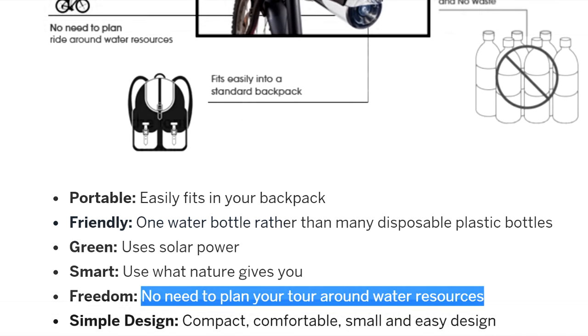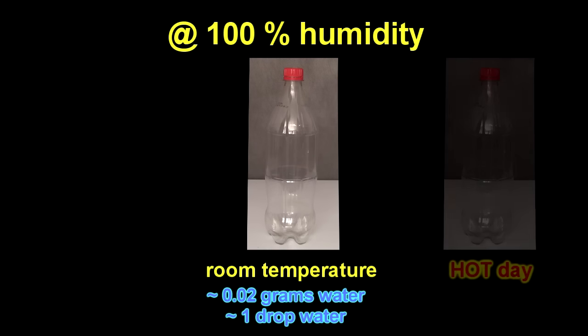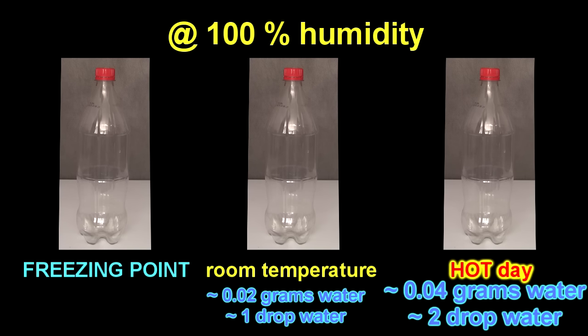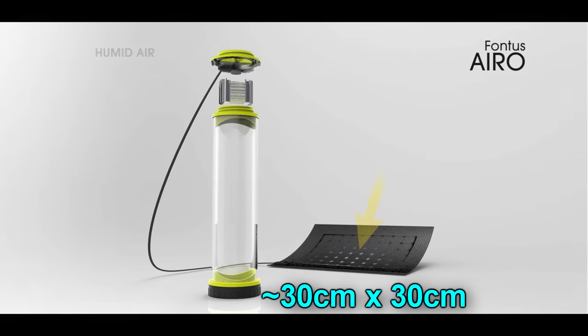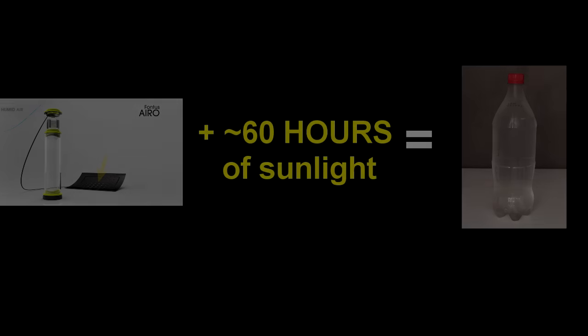But honestly, the little or no water thing is probably about right. Some back-of-the-envelope calculations for this thing running at room temperature is it will lose about half of its efficiency at 50% humidity and won't work at all below 25% humidity. To make things even better, the Fontus Aero ran on a solar panel about 1,000 square centimeters. And with that, you would get about 1 liter of water in a week.